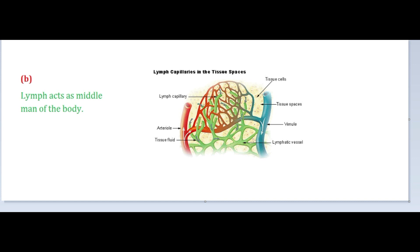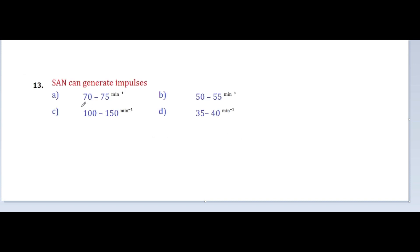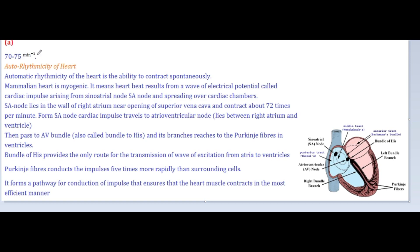Next question: how many impulses can the SA node generate per minute? Options: 70–75, 55–55, 100–150, 35–40. The SA node — sino-atrial node — is located at the upper corner of the right atrium. The answer is option A: 70 to 75 impulses per minute. The heart is auto-excitable and myogenic.